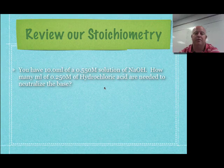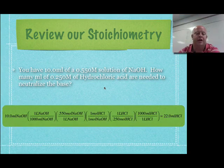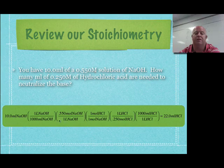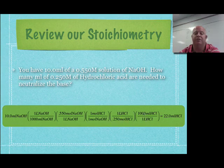Pause the video and finish calculating it, then we'll give you the answer key. Here's the answer: we start with 10 milliliters of sodium hydroxide, convert from milliliters to liters, then use the concentration of 0.55 moles per liter to cancel liters and go to moles. The mole ratio is 1-to-1. Keep in mind if you were working with a diprotic acid, this would not be a 1-to-1 ratio, so you'd have to adjust for the balanced chemical equation. Using 0.25 molar HCl and converting liters back to milliliters, you should have gotten 22.0 milliliters of hydrochloric acid.